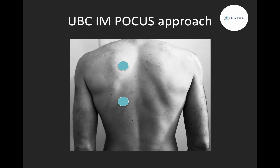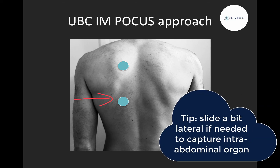Points 5 and 6 will be on the back and are patient dependent — some patients may not be able to sit up or roll over. Generally, go slightly lateral to midline, avoiding the scapula, with one point more superior and another more inferior. With that inferior point, try to capture the thoraco-abdominal interface to catch any dependent pathology, and it can be helpful to slide a bit more laterally to capture the intra-abdominal organ as a reference point.